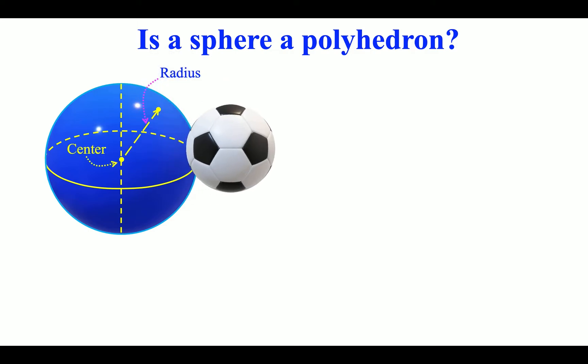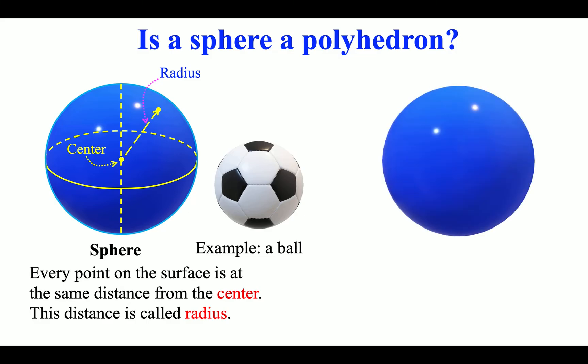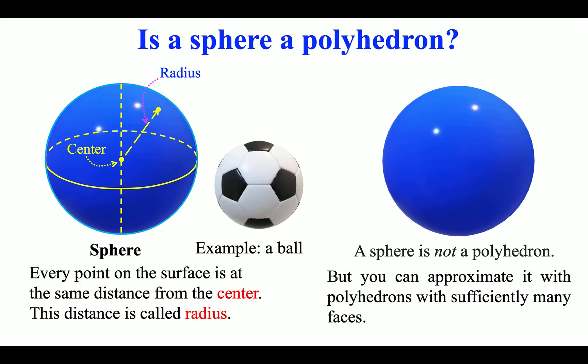Is a sphere a polyhedron? Every point on the surface is at the same distance from the center. This distance is called radius. A sphere is not a polyhedron, but you can approximate it with polyhedrons with sufficiently many faces.